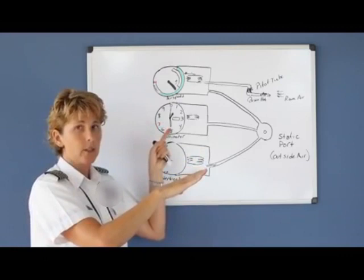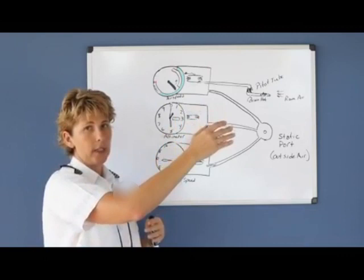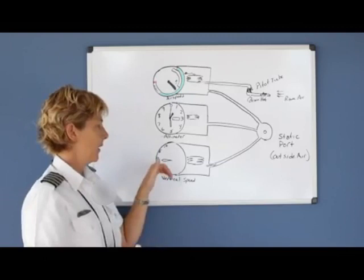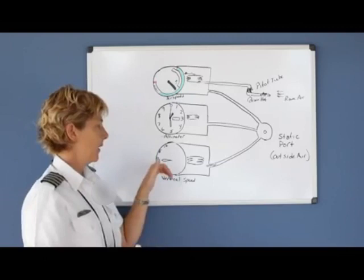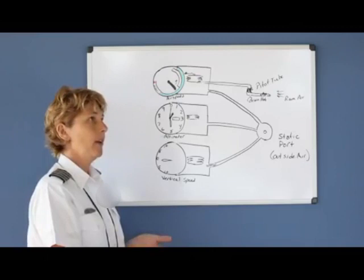So if you had initiated a climb, your altimeter will change instantaneously, but your vertical speed indicator will only change at the rate that you are changing. So the vertical speed indicator has a pretty decent lag in it. You cannot rely on your vertical speed indicator to show if you're climbing or descending. But after you're climbing or after you're descending, then it becomes accurate. So just remember that your vertical speed indicator has a pretty decent lag in it. That's basically how your airspeed, your altimeter, and the vertical speed indicator work off of your pitot tube and your static port.